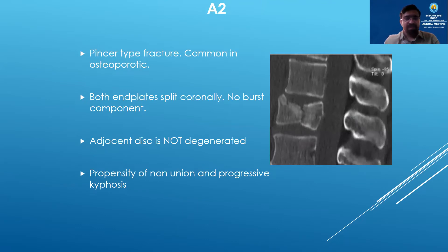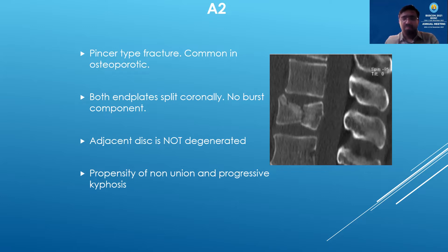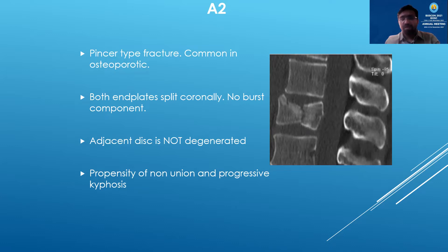The A2 type is slightly trickier — it's the pincer type, common in osteoporosis. In this, both the end plates are fractured horizontally, that is coronally, and there is not a significant burst component. The adjacent disc is not significantly degenerated, but over time, if these are neglected, they will become degenerated because of the movement. These fractures tend to go into nonunion and progressive kyphosis.